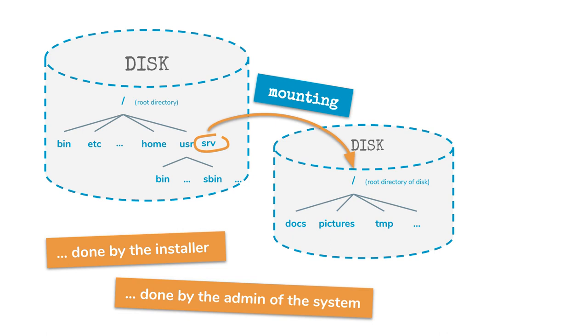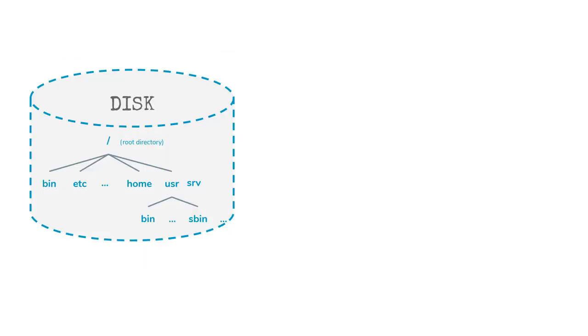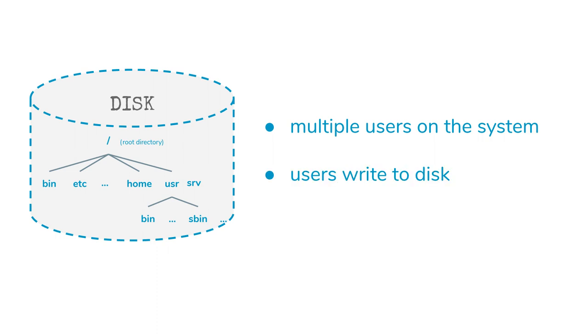You may ask: why mount additional disks at all — why not just take a larger disk? There are two answers. The first, obvious reason is that there simply is no larger disk available but you need more space, or your system is already installed and running and you need to add space without reinstalling. The second, more common reason is that you want to separate disk areas from other disk areas. Take a scenario where multiple users are working on the same system and writing data without minding the overall free disk space.